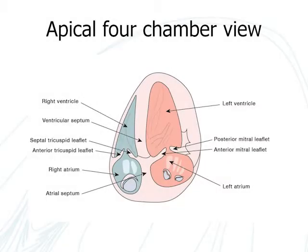The myocardial performance index, also known as the TIE index, is made up of a combination of systolic and diastolic values. In patients with idiopathic pulmonary hypertension, the index correlates with symptoms, and values above 0.88 predict poor survival.